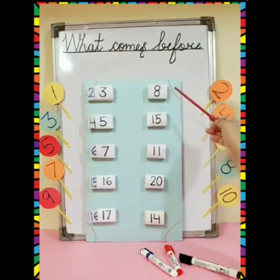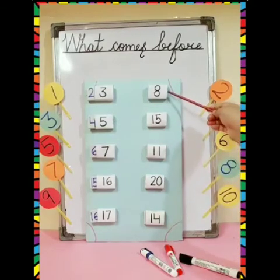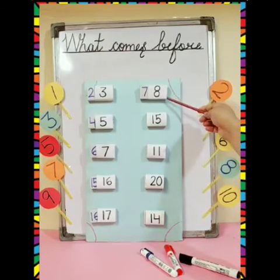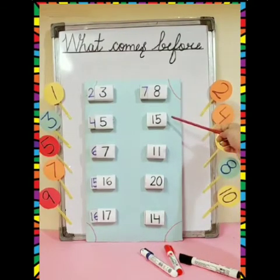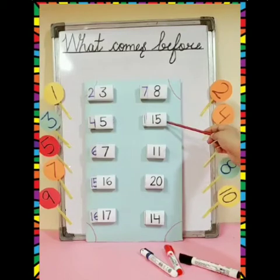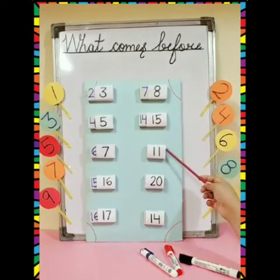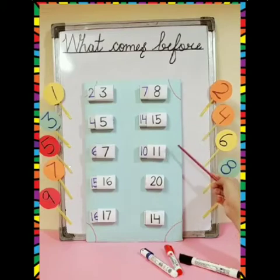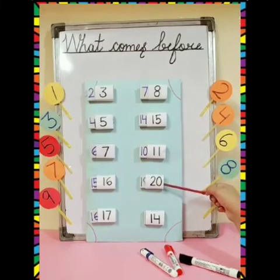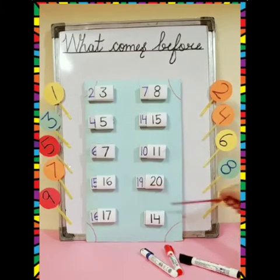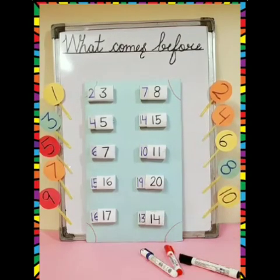What comes before 8? Number 7. What comes before 15? 14. What comes before 11? 10. What comes before 20? It's 19. And what comes before 14? It's 13.